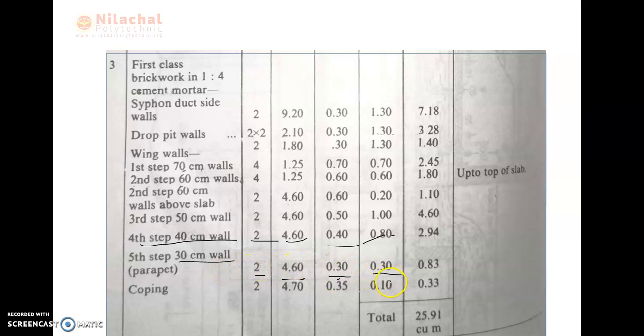Then we define the quantity. The total is 2 × 4.60 × 0.30 × 0.30, which is equal to 0.83 m³.